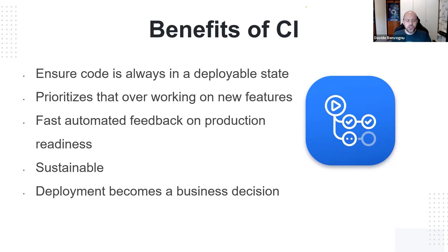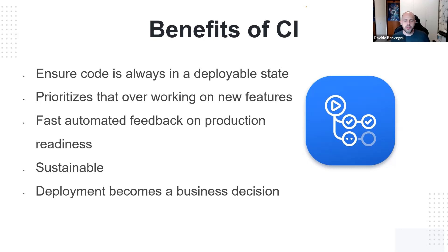We want to fix broken code first, be able to deploy at any point in time, and then keep working on new features. We want feedback on our code and our production as soon as possible — we want to break things early, obviously before reaching production. This is why CI is very important. If you have all of this done correctly, deployments become just a business decision, not a technical one — because you always have something working and deployable that will not break production.